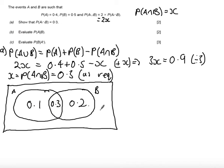These three here total up to 0.6, so the remaining probability outside of the sets of A and B is 0.4.